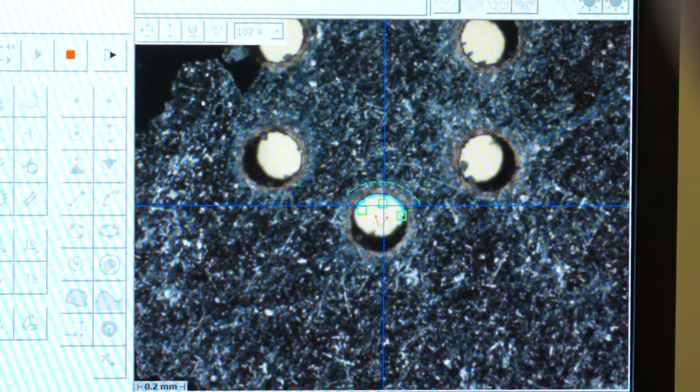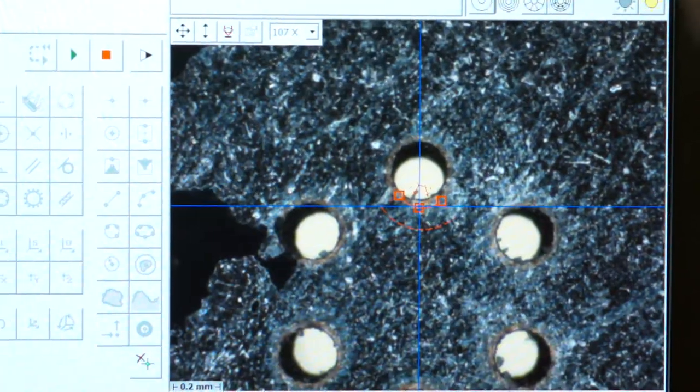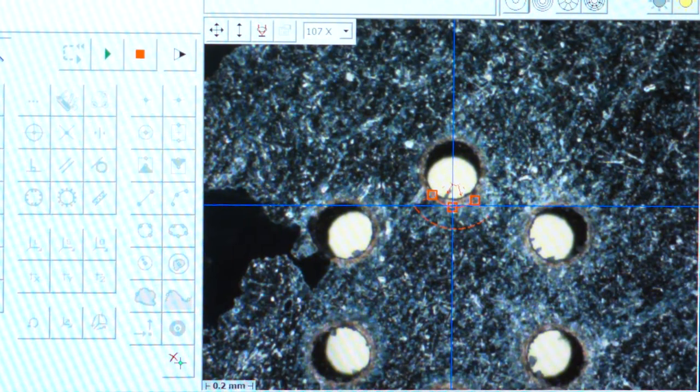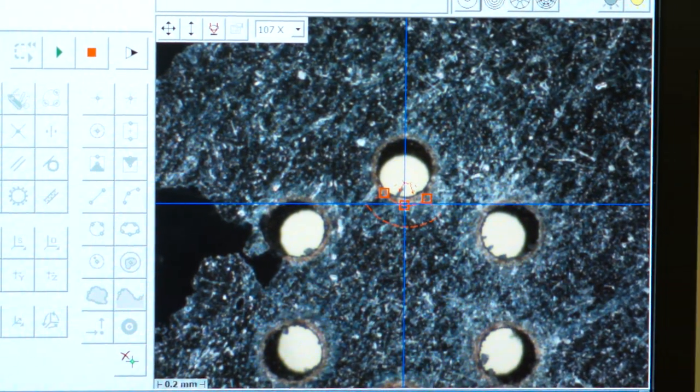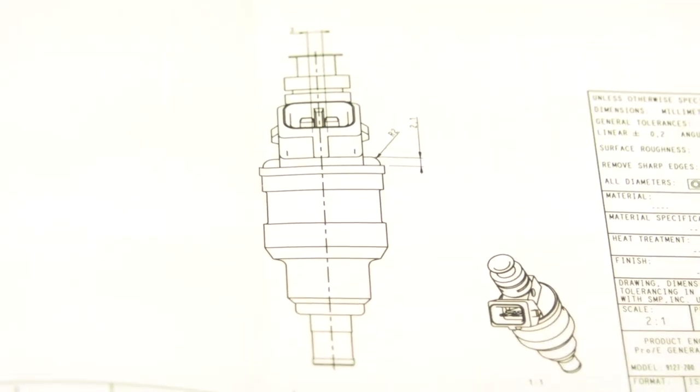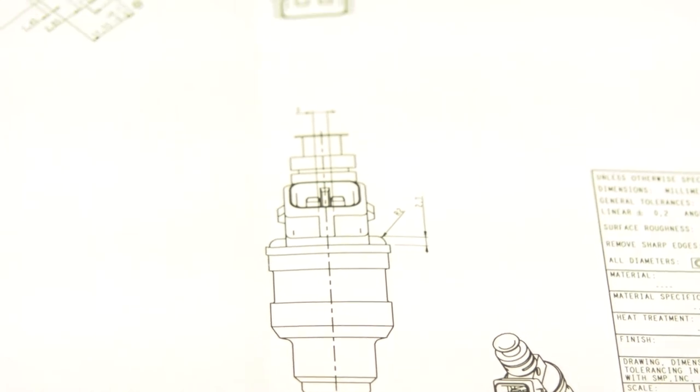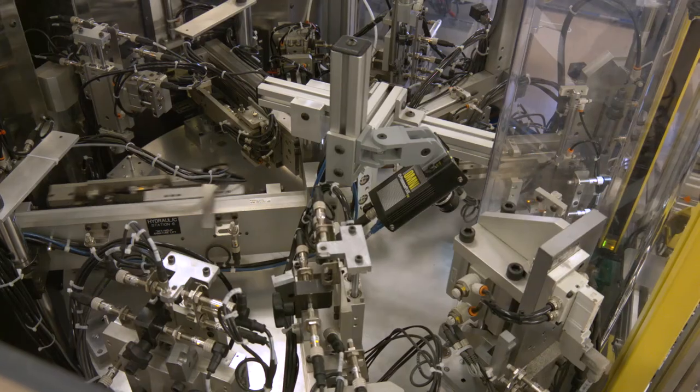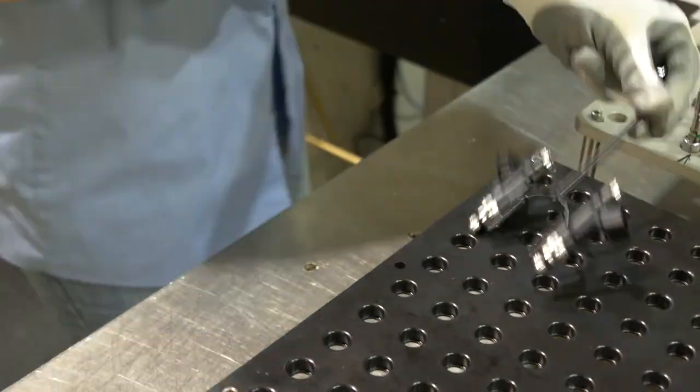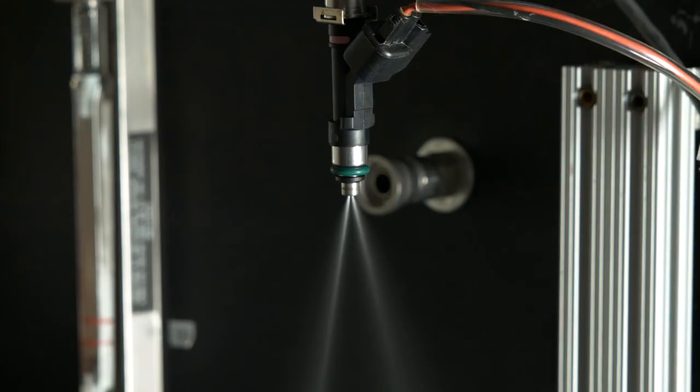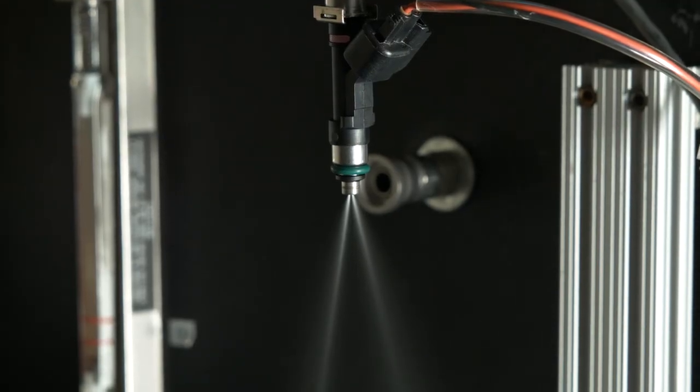This same machine calibrates static flow for all injector discs ranging from 4 to 12 holes. The end result for technicians is a line of matched fuel injectors that are designed, inspected, assembled, manufactured, and tested to perform properly every time.